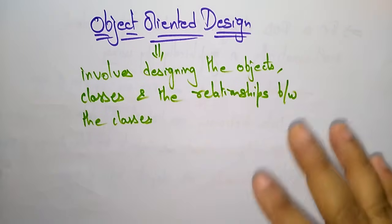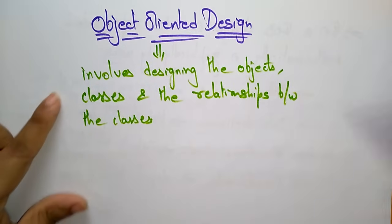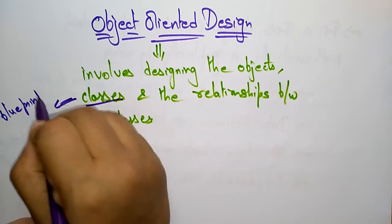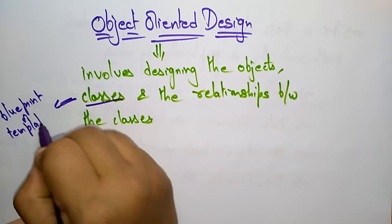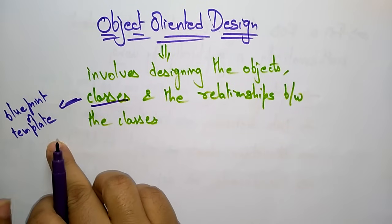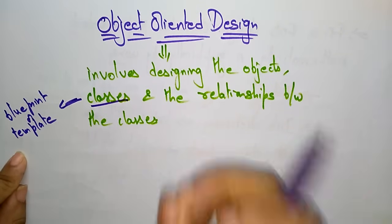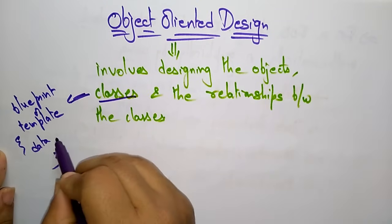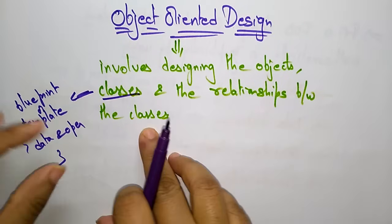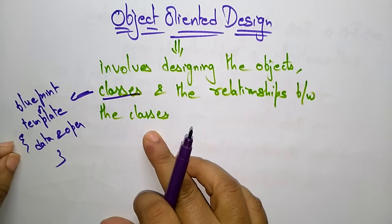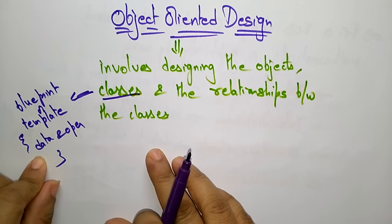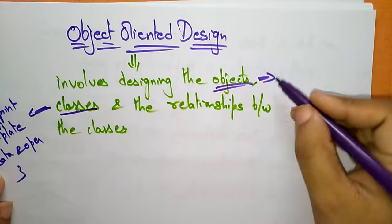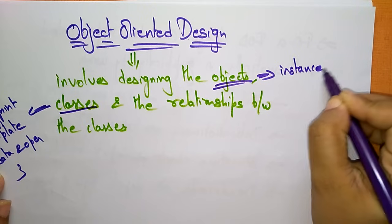So what is a class? A class is nothing but a blueprint — or you can simply call it a template. A class is a blueprint or template that identifies something in terms of its data and operations. And what about the object? An object is nothing but an instance of a class.